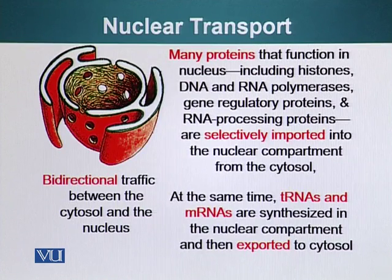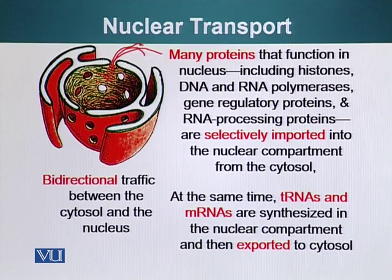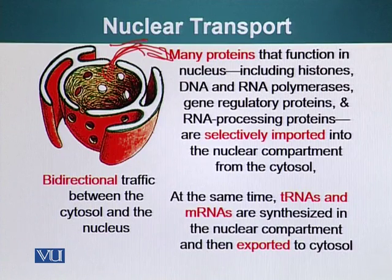The genetic material is in the nucleus. If DNA has to replicate, DNA polymerase has to come inside the nucleus. For transcription, RNA polymerase has to come in. When a cell receives a signal, activated transcription factors also enter the nucleus through the nuclear pore. At the same time, transfer RNAs and messenger RNAs synthesized in the nucleus come out through the nuclear pore and are exported to the cytoplasm, where messenger RNAs will result in translation.